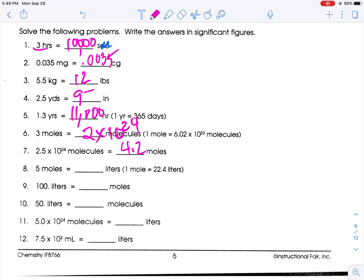5 moles to liters. 5 moles - well, I know that 1 mole is 22.4 liters. So 5 times 22.4 is 112 liters. I need one sig fig. Is 1 enough to round that up? No. 100 liters.